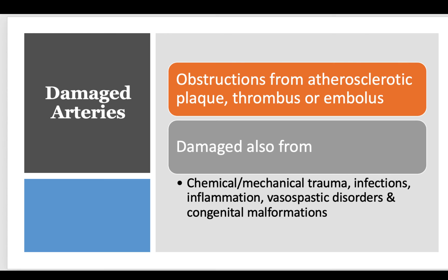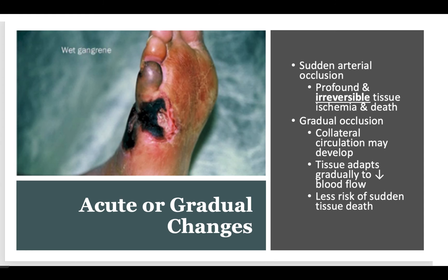Damaged arteries: it starts with obstructions from atherosclerotic plaques — that's cardiovascular disease where a thrombus or embolus forms. Also chemical and mechanical trauma sets patients up for all these cascades. With sudden arterial occlusion it is profound and sometimes irreversible. If we catch things quickly enough, intervention can remove the clot and restore perfusion, but most of the time they cannot. In gradual occlusion, collateral circulation can help provide blood flow; if they don't have collaterals, it's game over.